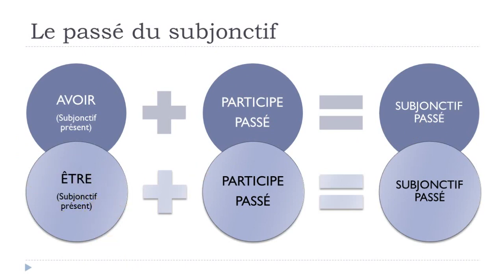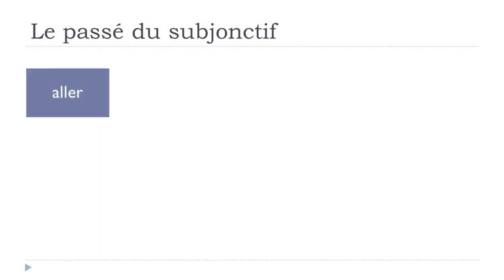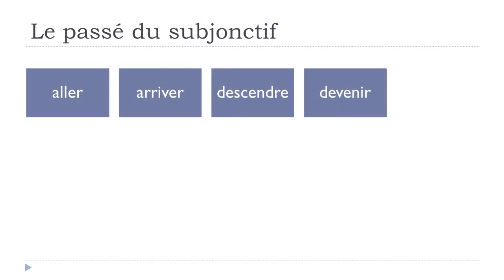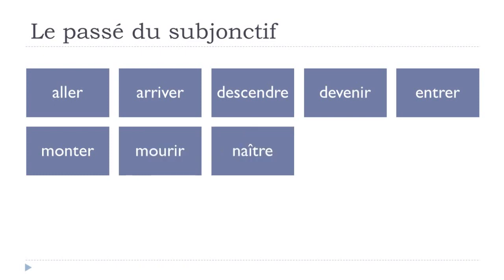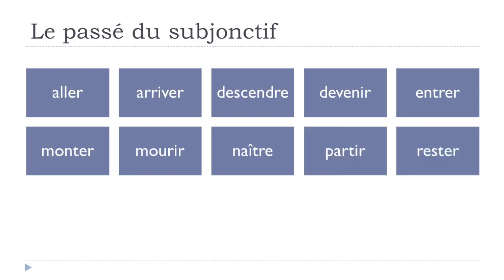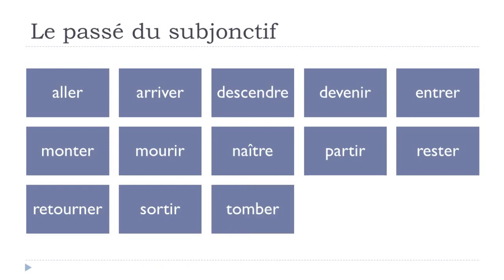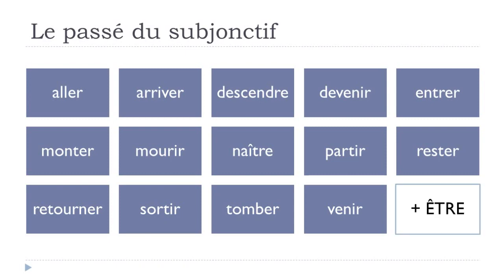For être, as usual, we're talking about exceptions. These verbs require être: aller, arriver, descendre, devenir, entrer, monter, mourir, naître, partir, rester, retourner, sortir, tomber, venir — all these verbs will use être at the passé du subjonctif.